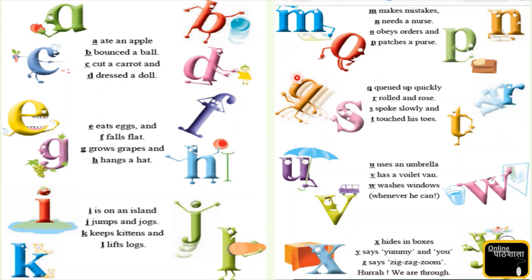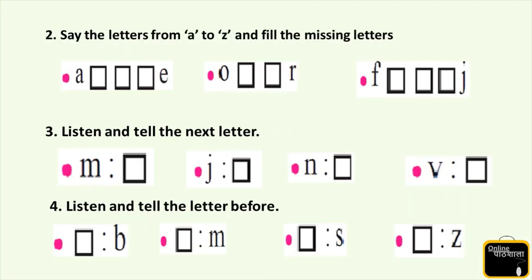Very good kids, you enjoyed this poem. Now kids, here we have some questions. Let's try to solve them. Question number 2: say the letters from A to Z and fill in the missing letters. Kids, A, then a box, then a box, then a box, and E. Now tell me what will come after A? Yes, it's B. Next is C. Next is D. Now read: A, B, C, D, E. Very good.